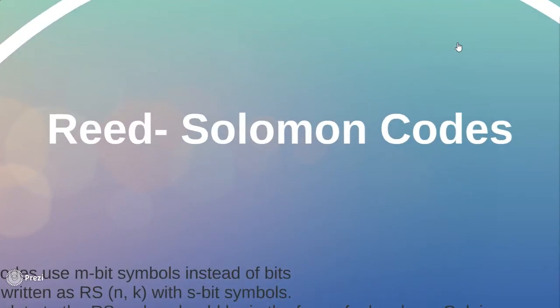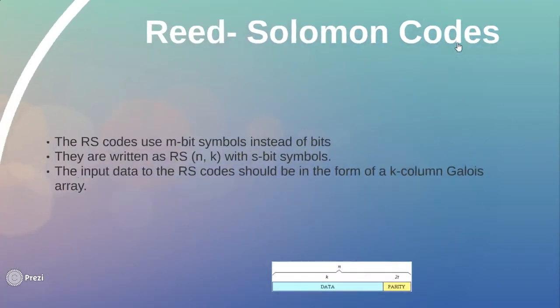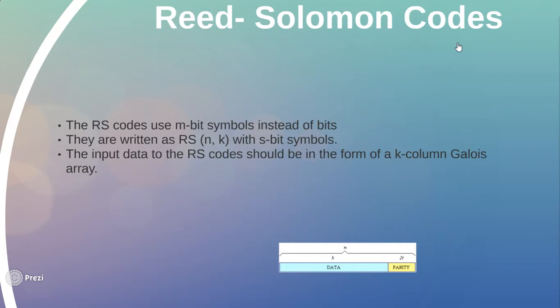Now let's move on to the Reed-Solomon codes. The Reed-Solomon codes use m-bit symbols instead of bits. They are written as RS(n, k) with s-bit symbols. The input data to the Reed-Solomon code should be in the form of a k-column Galois array.